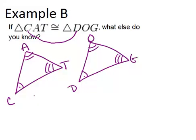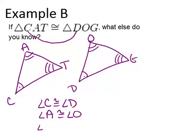So those are three things that we know. So angle C is congruent to angle D, angle A is congruent to angle O, and angle T is congruent to angle G.